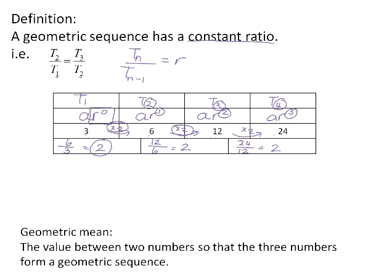we can think of term 1 as being ar to the power of 0. We know anything to the power of 0 is 1, and a times 1 would just give us a. But the same is still true even for term 1. Therefore, the general term of a geometric pattern is the first term multiplied by the ratio raised to the power n minus 1. We can substitute in the values of a and r from a geometric sequence, and it will give us the formula for that pattern.